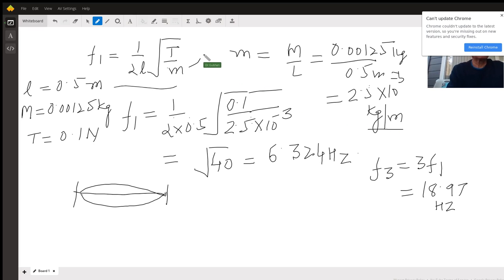The tension in the wire is given as 0.1 Newton. Therefore if you plug in these values in the formula, the fundamental frequency F₁ is 1 divided by 2 times 0.5, square root of tension 0.1 Newton divided by linear density 2.5×10⁻³ kg per meter. If you work out this value, the fundamental frequency works out to be √40 = 6.324 hertz.